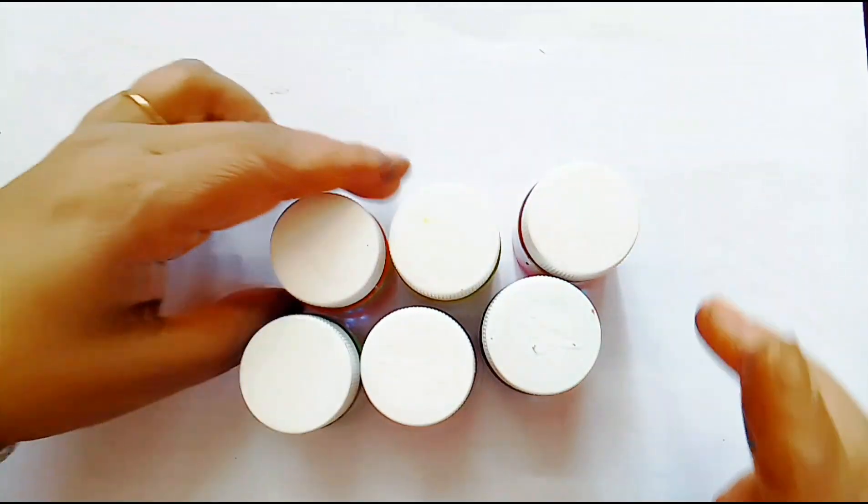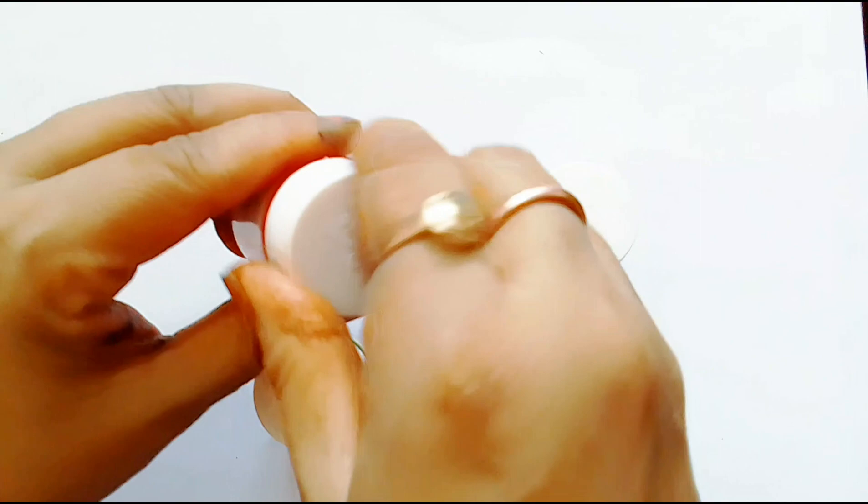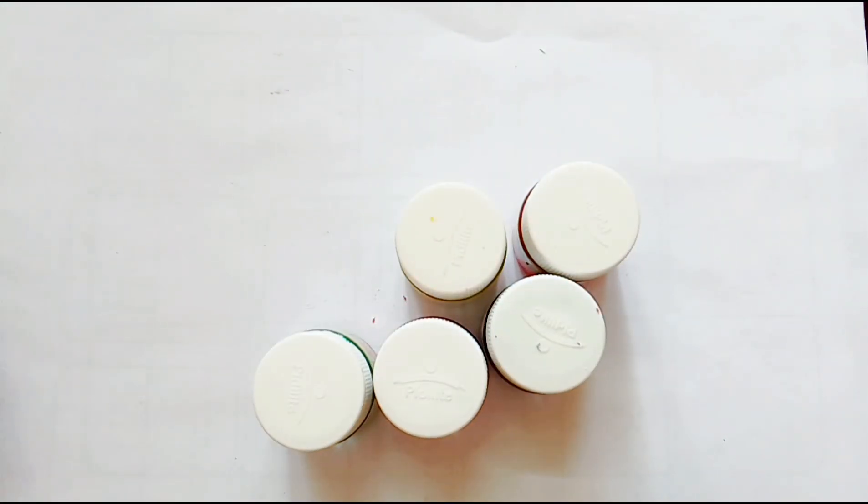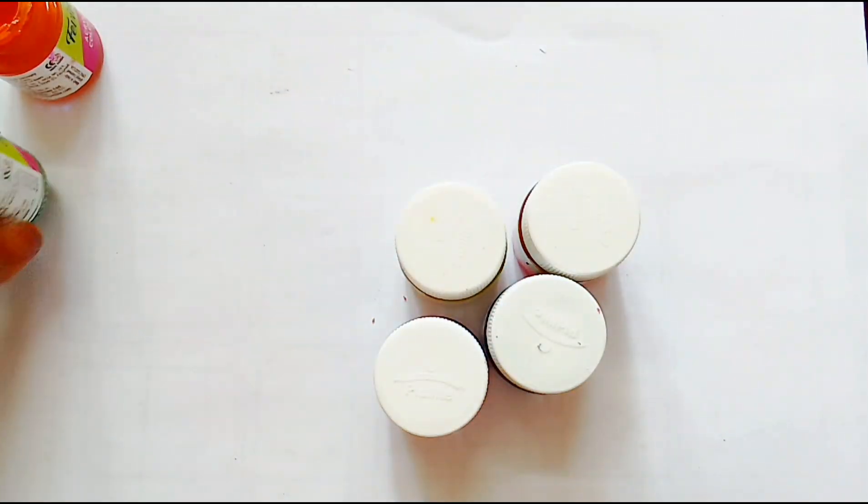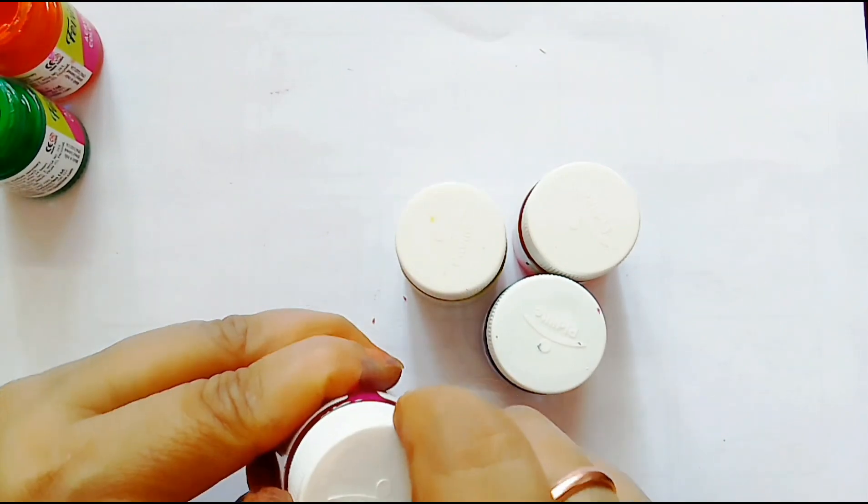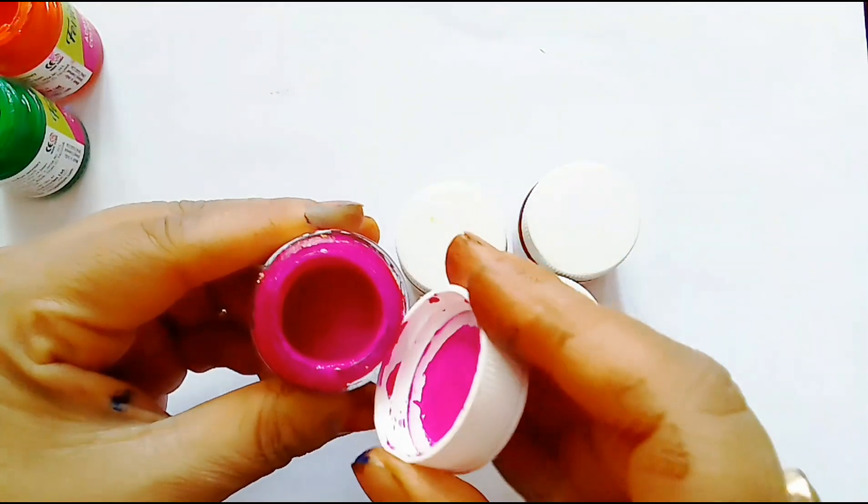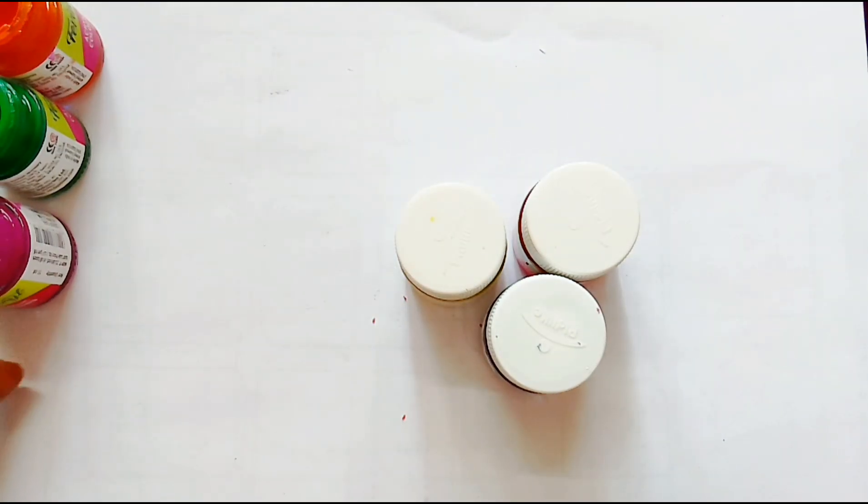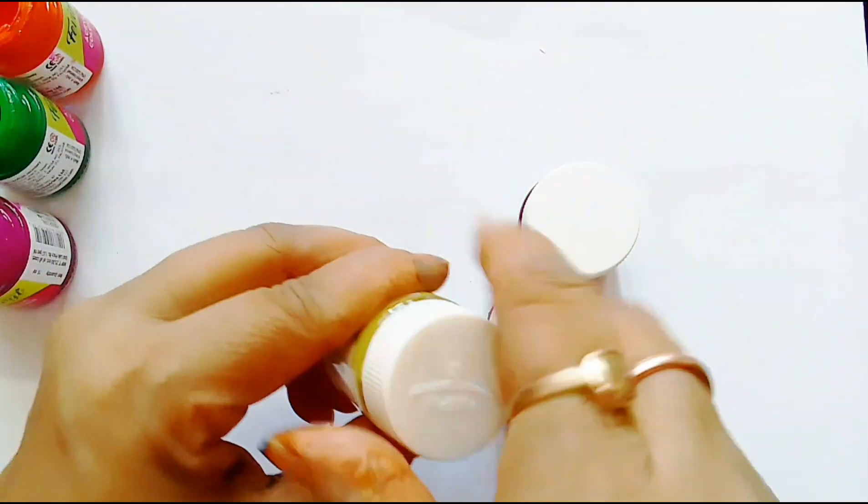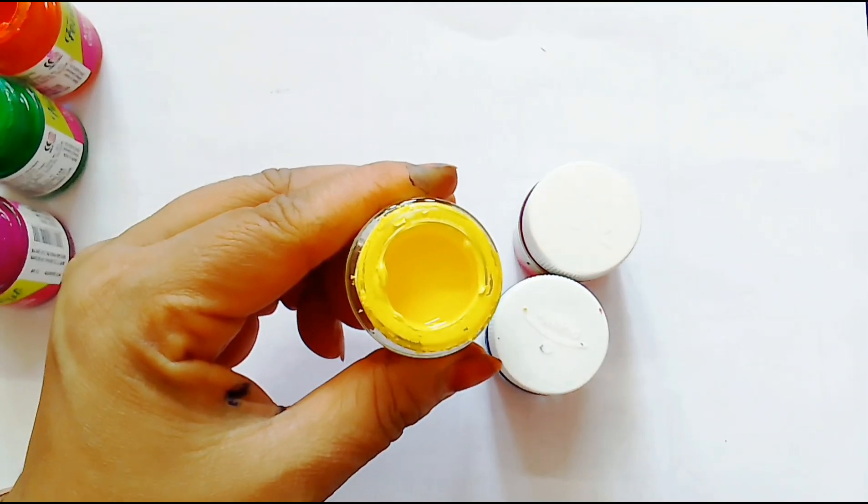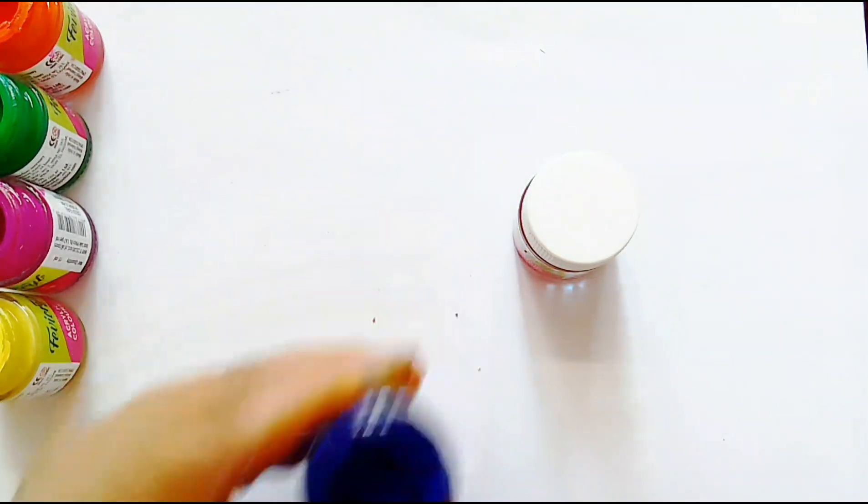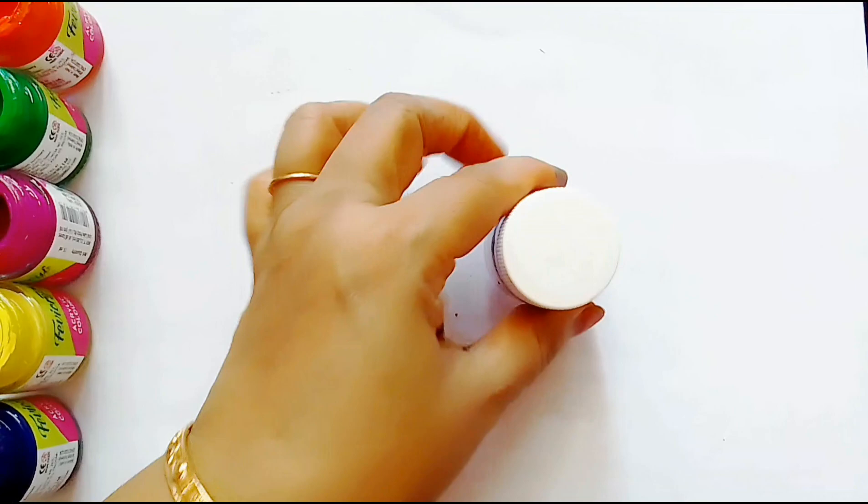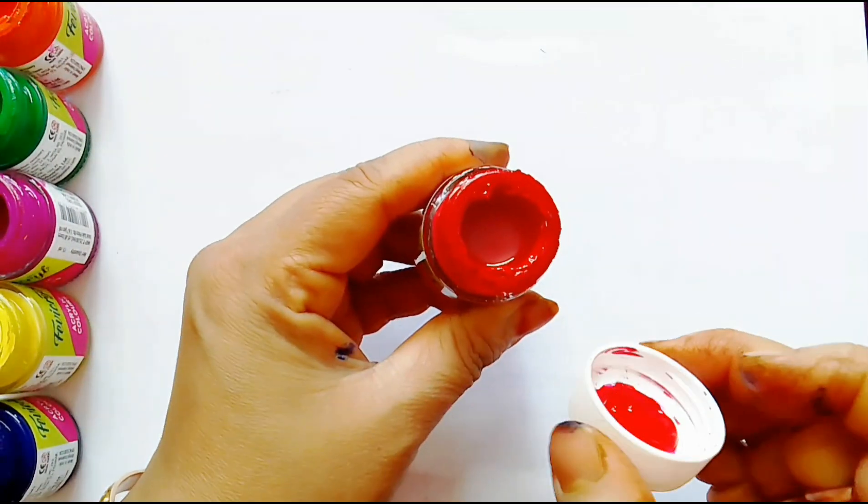Hello children, let's learn some colors name. Orange color, orange color. Green color, pink color. Pink color, pink color. Yellow color, yellow color, blue color, blue color, blue color. Red color, red color, red color.